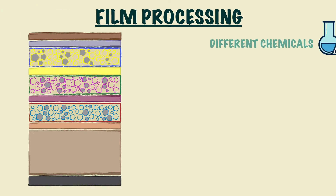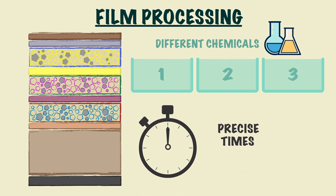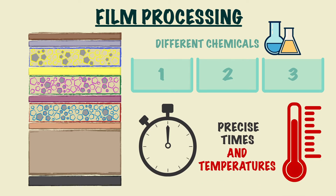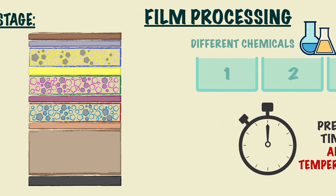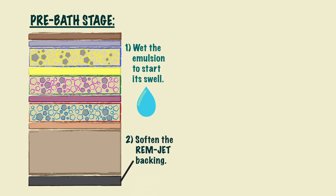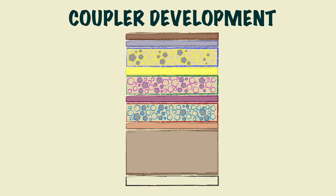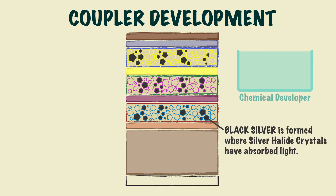Film processing is done using different chemicals in different tanks, all in a specific order with precise times and temperatures. The first stage is used to wet the emulsion to start its swell and also to soften the REM jet backing so that it can be removed in the next stage, called the REM jet removal stage. For colour film, the next stage of processing is called coupler development. The emulsion is dipped in a chemical developer so that actual black silver is formed where the silver halide crystals have absorbed light.